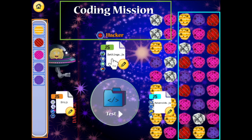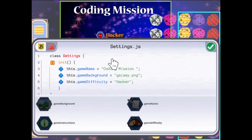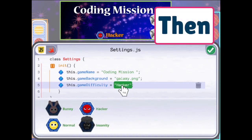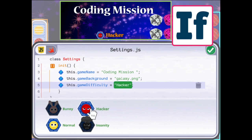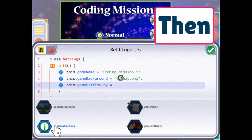For example, if your friend says the game was too hard, you will want to change the difficulty. If you choose hacker, then it will be hard. But if you choose normal, then it will be easier.